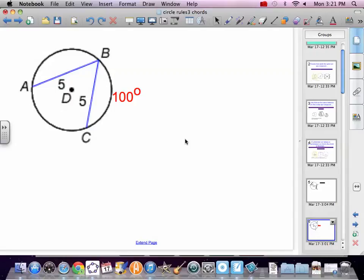Here we have two chords, they're the same size. AB and BC are the same size. They're both 5. BC catches a 100 degree arc. Therefore, arc BA is congruent. It is 100.